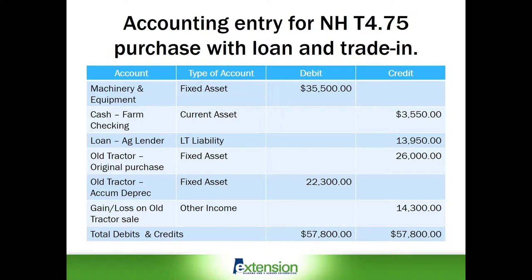Number three, a copy of the fixed asset listing from the tax preparer to determine both the original purchase price of the old tractor and accumulated tax depreciation taken on the old tractor. Reminder: this compound entry uses the 'other cash uses' column on the expense sheet and is carried over into the 'other cash uses' box on the profit and loss sheet on the Excel spreadsheet.